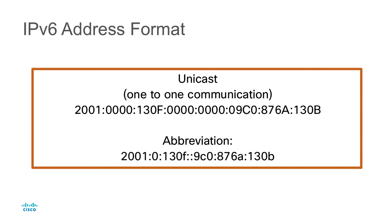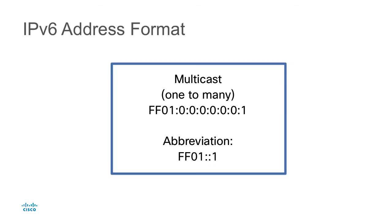So the abbreviated address — 2001:0:130F::9C0:876A:130B — is a little easier to say, though still longer than an IPv4 address. We can use things like DNS to simplify the resolution. We also have multicast addresses for one-to-many communication, represented with FF01. The full multicast address FF01:0:0:0:0:0:0:1 can be abbreviated as FF01::1, and IPv6 is smart enough to expand that correctly.